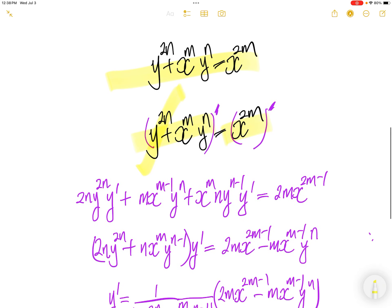The derivative of this is 2n, comes down, y to the power of 2n, times the derivative of y, which is y prime.